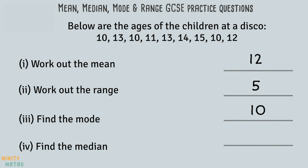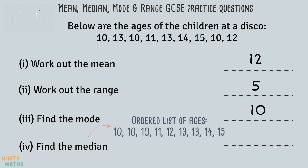To find the median we need to find the middle value in the list once the list has been put in order. Here the value of 12 is exactly halfway through the list. We can double check this by counting the number of values on each side of the median.